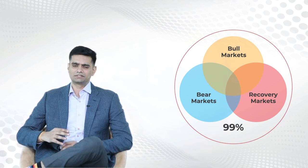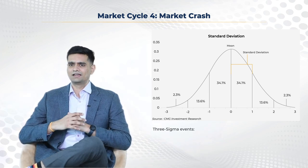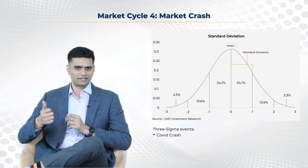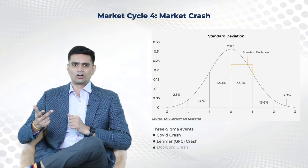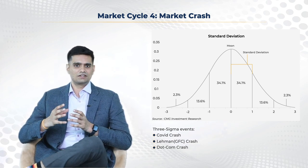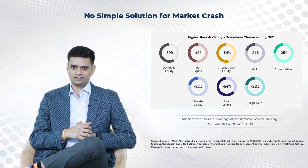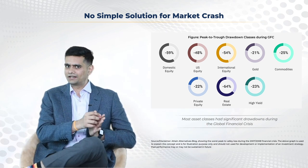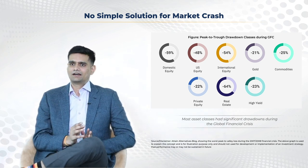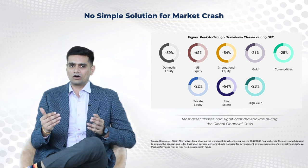When we cover bull market, bear market, and recovery market, we are essentially talking about more than 99% of all market conditions. But that still leaves us with less than 1% chance of a market crash. A market crash is a more than three-sigma event — events like the COVID crash, the Lehman crisis, or the dot-com crash. Whenever they occur, they lead to significant devastation in an investor's equity portfolio, and no level of stock-level diversification really helps. During Lehman, almost every asset class fell anywhere between 25% to 60%.